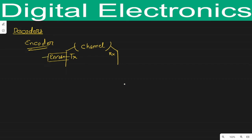The encoder converts 2 raised to power n number of bits into n number of bits. It minimizes the number of bits so that minimized bits are transmitted towards the receiver. The receiver receives the minimized bits, and on the receiver side the inverse operation of the encoder is done by a device known as a decoder. The decoder converts n inputs into 2 raised to power n outputs.